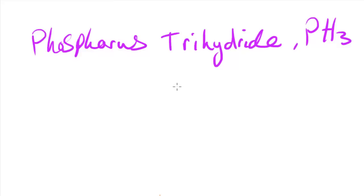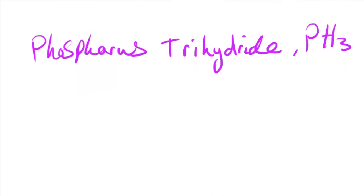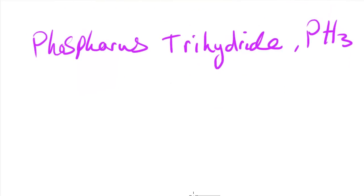In this video I'm going to be going through how you can systematically work out the number of bonding pairs and the number of lone pairs around the central atom in a molecule. I'm going to do this by going through examples. Once you've found out the number of bonding pairs and lone pairs, you can then use that information to deduce the shape of the molecule around that atom.